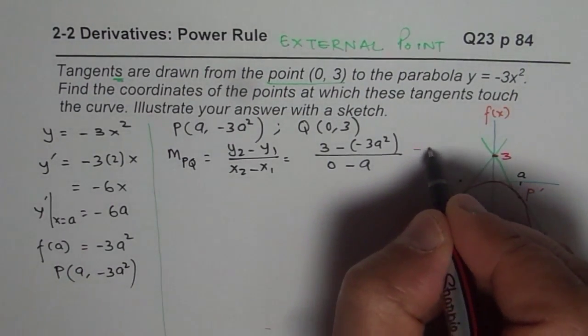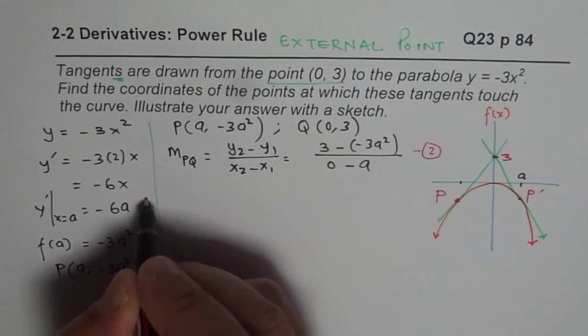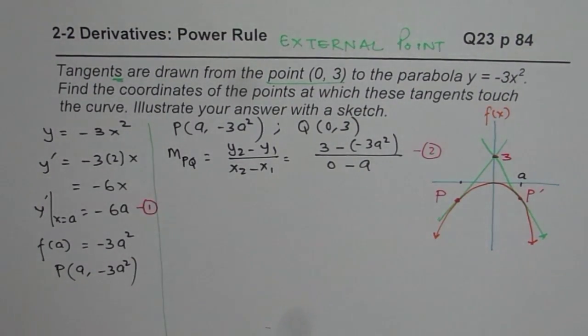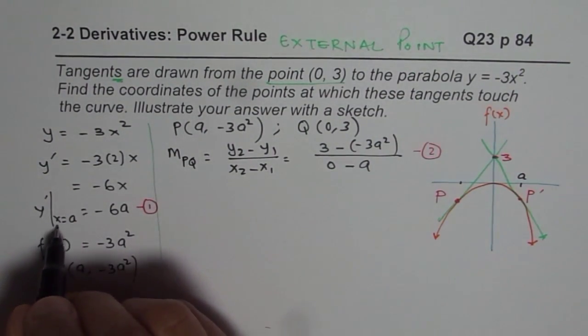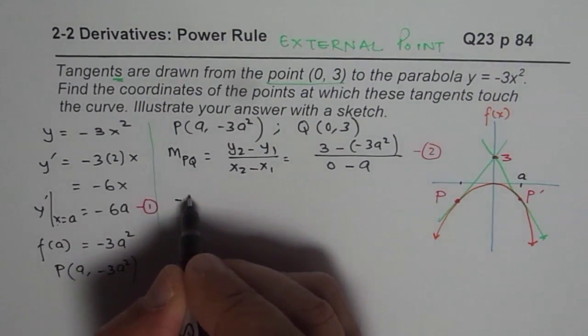So this slope which we found here should be equal to the slope which we found earlier. These should be equal. And therefore, we can get the equation that this slope is y' at x = A. So -6a should be equal to all this, which is 3 + 3a², divided by -A.